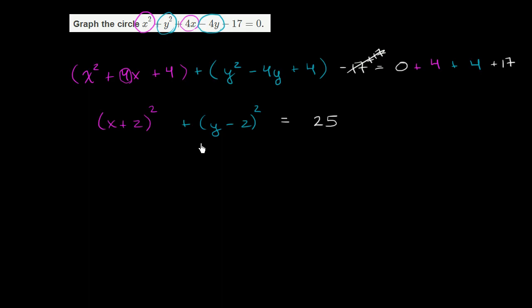Now, this is a form that we recognize. If you have the form x minus a squared plus y minus b squared is equal to r squared, we know that the center is at the point a comma b, essentially the point that makes both of these equal to 0, and that the radius is going to be r.